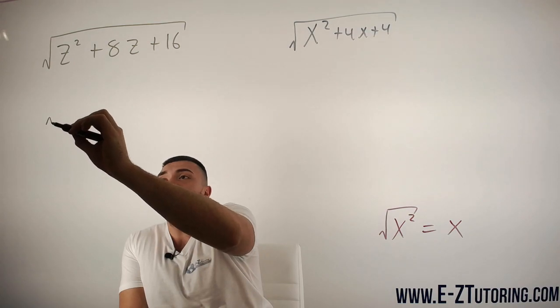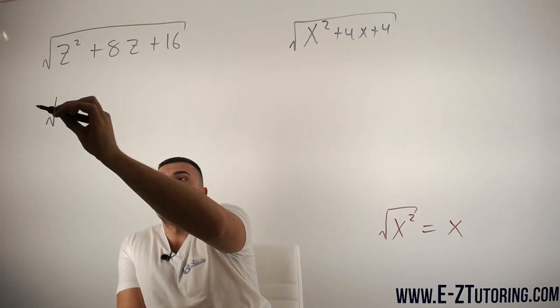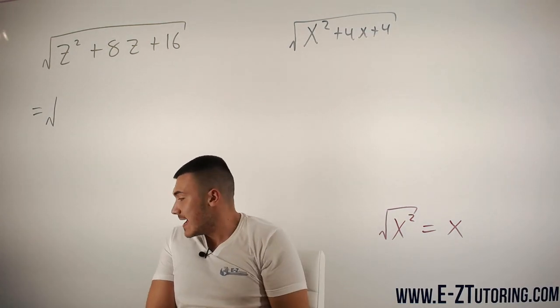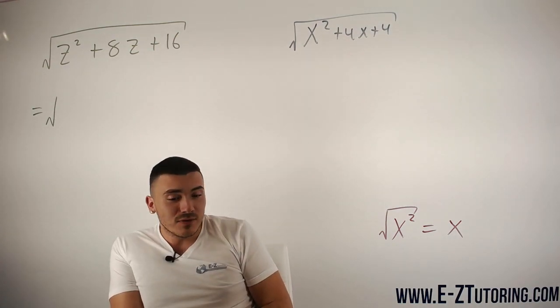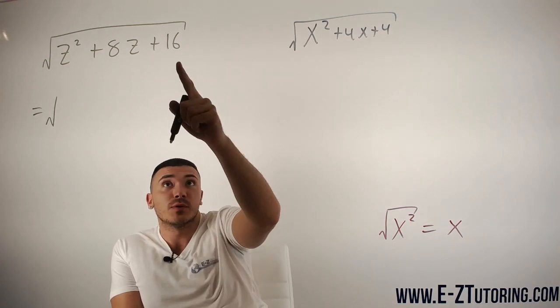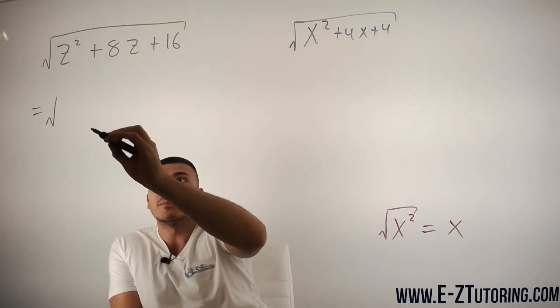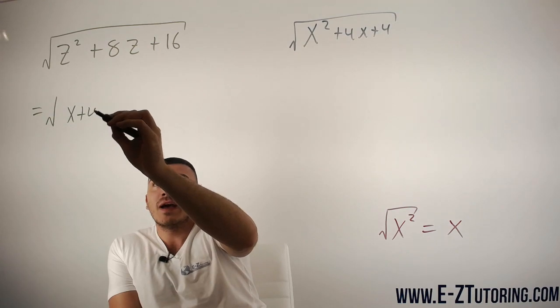So we are going to go ahead and factor this trinomial. We want two numbers that multiply to 16 and add to 8. Those numbers are obviously 4 and 4. 4 times 4 is 16, 4 plus 4 is 8. So when we factor this,